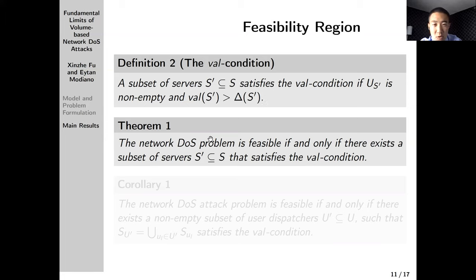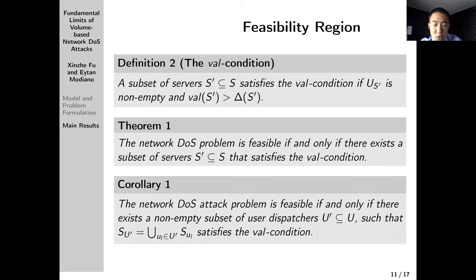We formalize this intuition by first defining this val-condition. A subset of servers satisfy this val-condition if U_S' is non-empty and val(S'), which is the damage the adversary can do, is greater than Δ(S'), that is the margin. This theorem formally shows that the network DOS attack problem is feasible if and only if there exists a subset of servers that satisfy this val-condition. The proof of the theorem is to formalize the intuition I just described. Also from the proof, we have this natural corollary that to check the feasibility of the problem, instead of going over all the subsets of servers, we can only check the subset of servers that is used by a subset of user dispatchers.